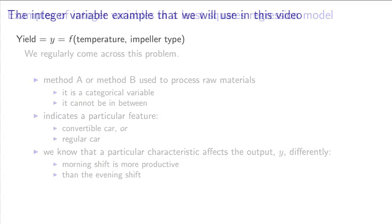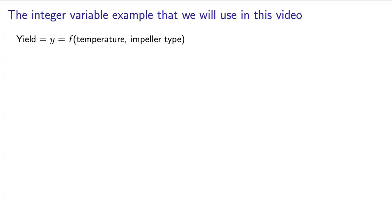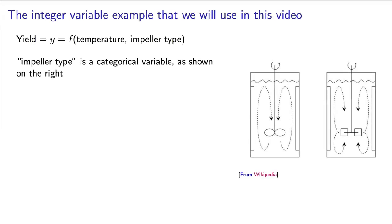But let me use a new example here, and I'll expand on it over the next few minutes. Consider the case where you wish to build a least squares model to predict the yield from your batch reactor. In your model, you want to use the temperature, which you know affects the yield, as well as the impeller type, whether it is a radial impeller or an axial impeller.